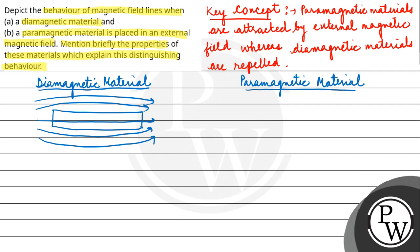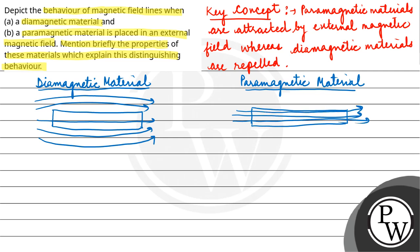If we talk about paramagnetic material, the maximum field lines will pass through the material. This brings us to μr — relative permeability — which is equal to B upon B₀, where B is the magnetic induction of the material and B₀ is the magnetic induction of the medium.